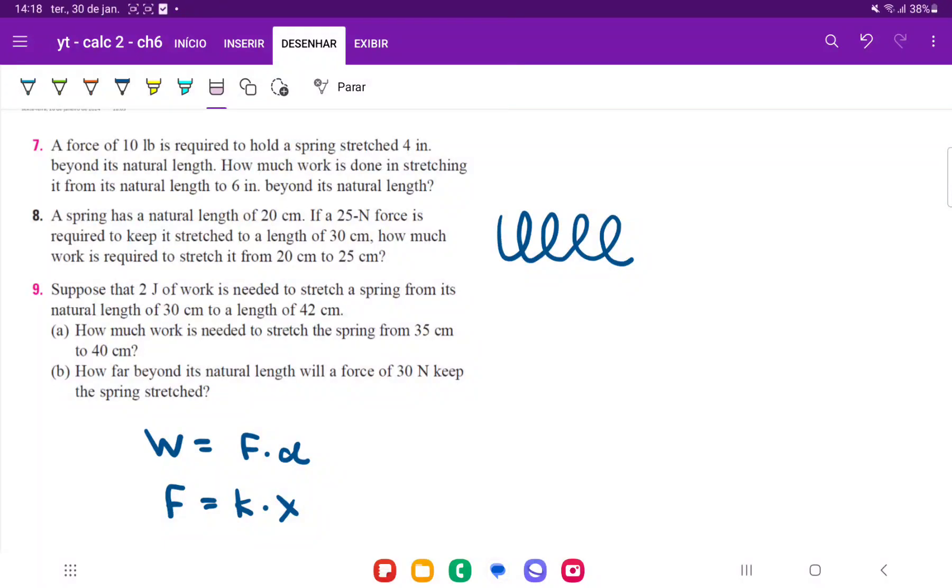For problem number seven, we're given that a force of 10 pounds is required to hold a spring stretched four inches beyond its natural length. The way that a spring works is it has its natural resting length, and if you stretch it out, it does require work to stretch it out. Remember that work is force applied through a distance, and when you stretch it out, it requires force to keep that weight, because if you don't apply any force, it's just going to bounce back to its original length.